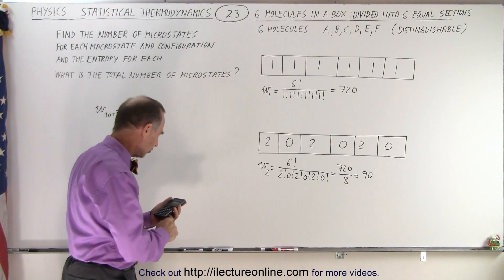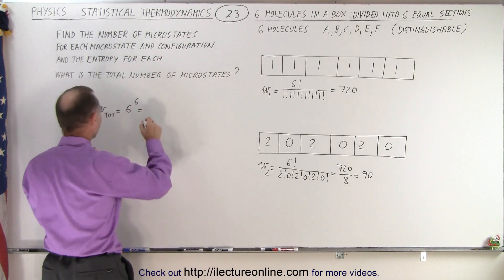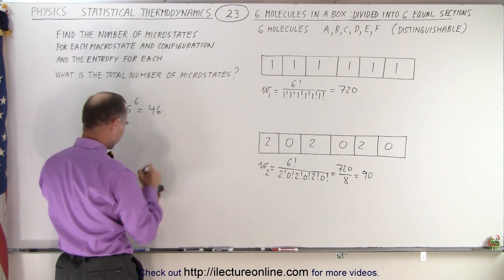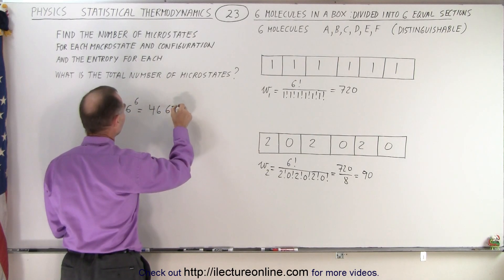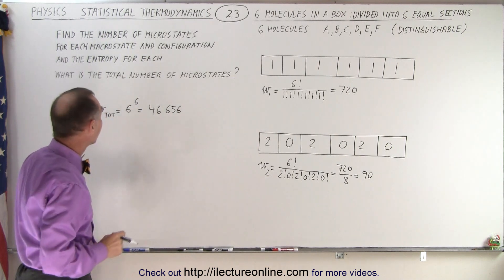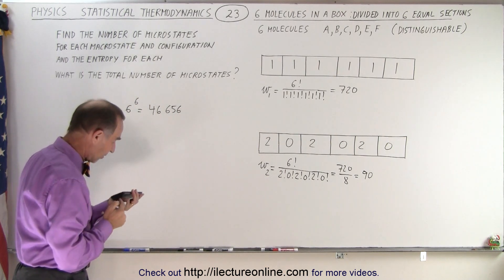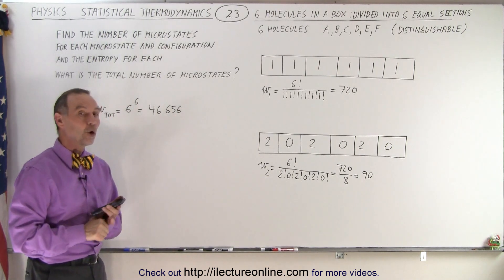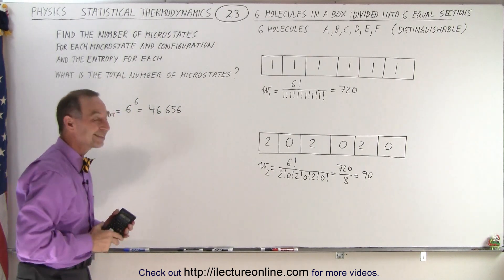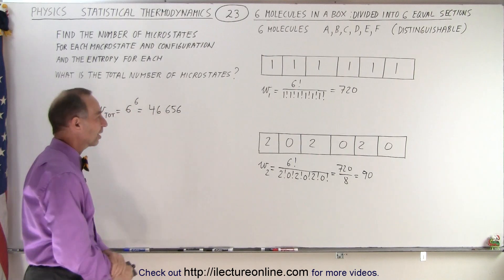So 6 raised to the 6th power, that's a big number. There's a total of 46,600, is it 6? Is that a 6? 656. As you can tell, my eyes aren't as good anymore as they used to be. So, total number of microstates in all the various combinations when we have 6 molecules in a box with 6 partitions is 46,656 microstates.